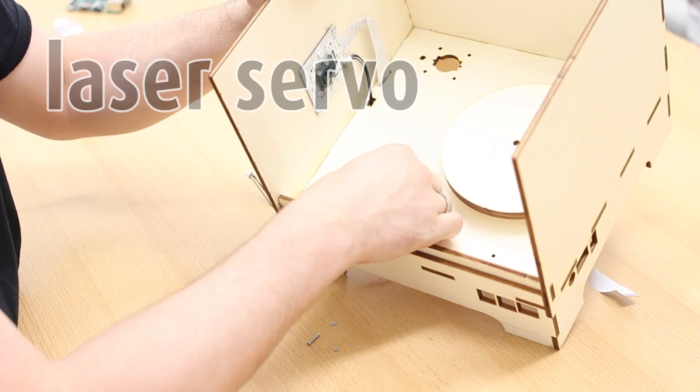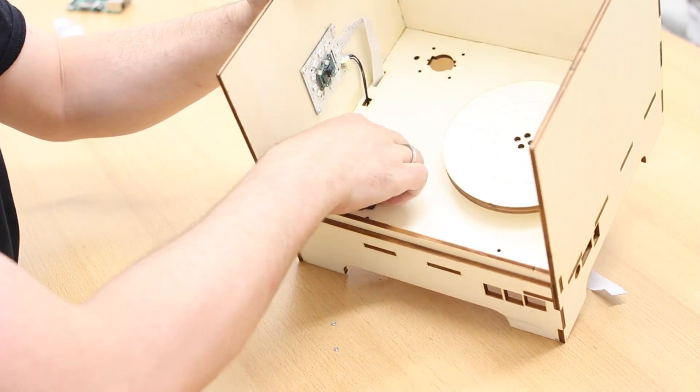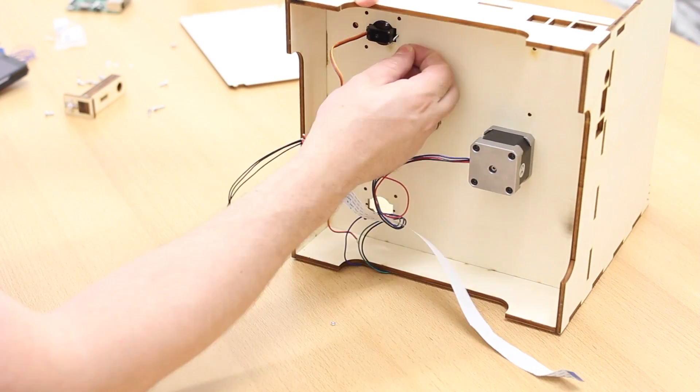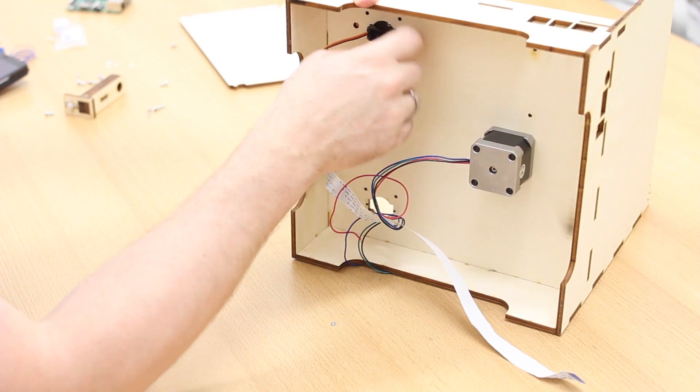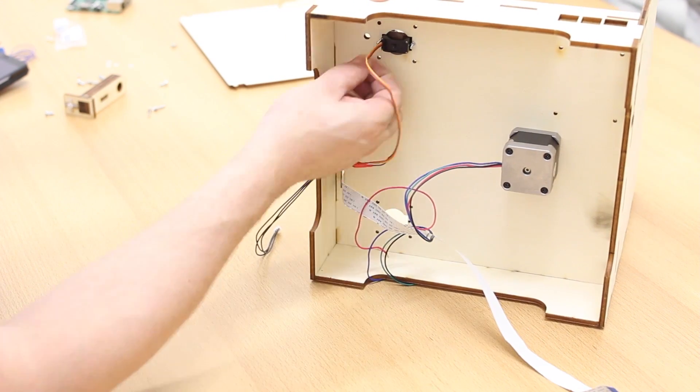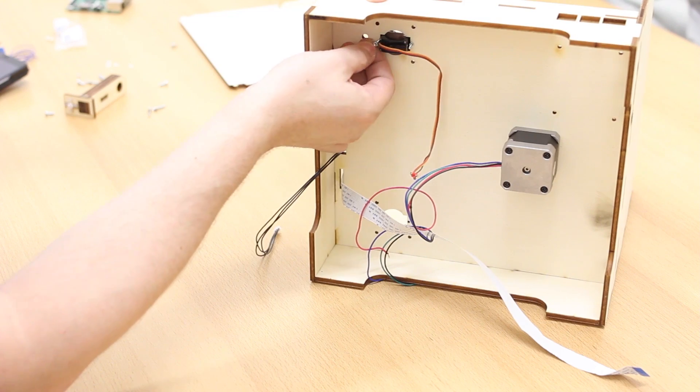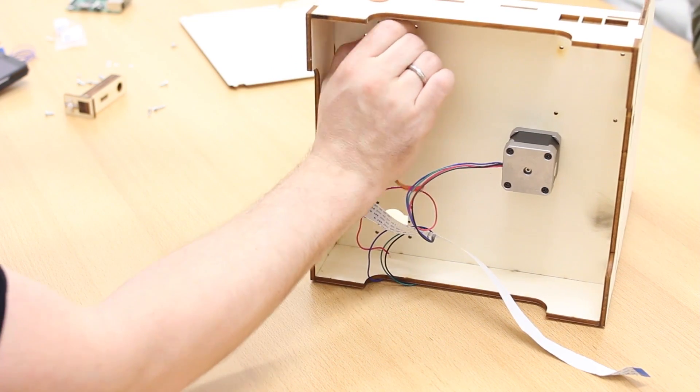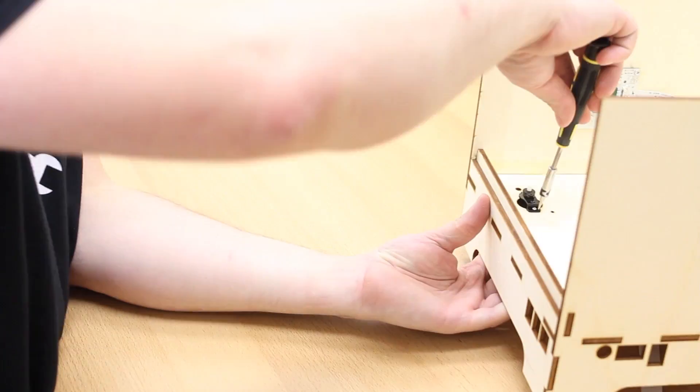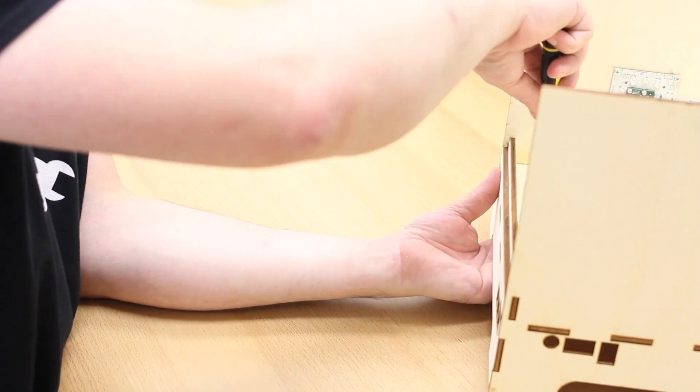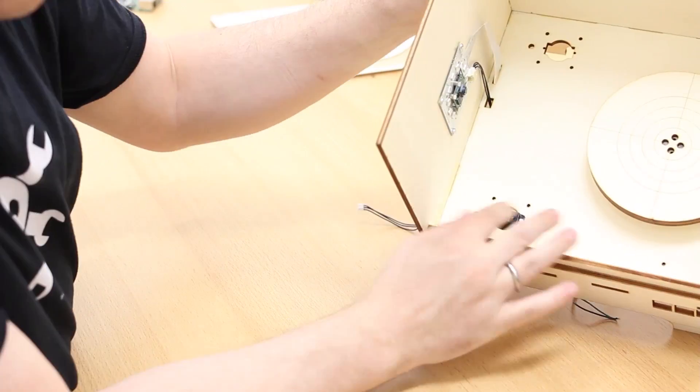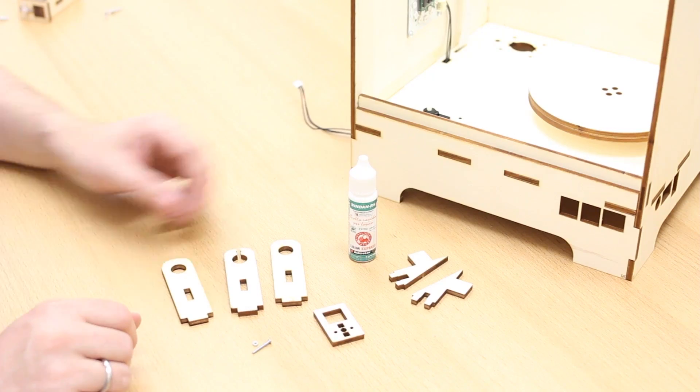Okay now we continue with the laser. First we have to mount the servo for the laser. Just use two screws and mount the servo to the base plate. We will not use the servo for the moment. It is just for mounting the laser. So the cable will not really be used.